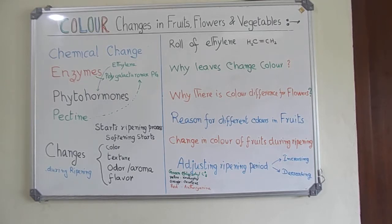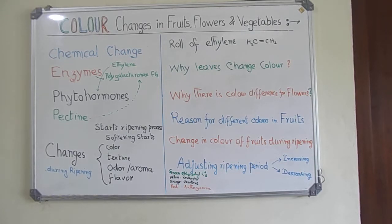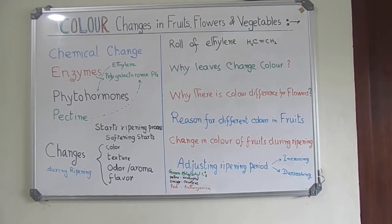The change in color of fruits during ripening can also be explained by the action of enzymes and phytohormones. When a green banana is ready to pluck, it starts producing its own ethylene and polygalacturonase (PG), the pectin starts decomposing, there is softening, the color gradually changes as the green chlorophyll decomposes to xanthophyll giving yellow color, texture changes, taste changes, and odor changes.